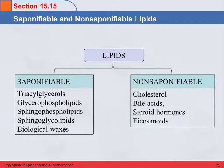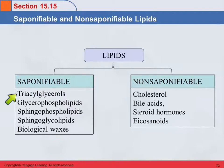It's a kind of linkage — an ester linkage. They all had at least one ester linkage. The biological waxes only have one. The triacylglycerols had three. The glycerophospholipids had four. But they all have at least one ester linkage, so they can all be saponified.